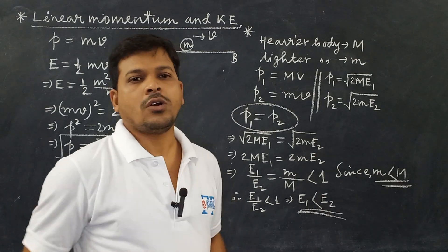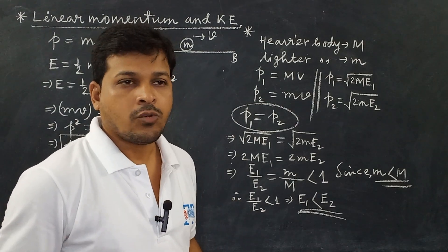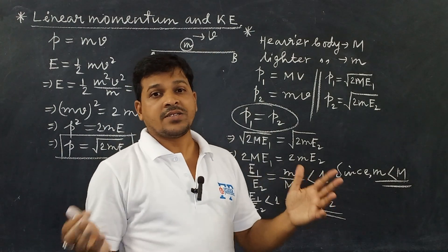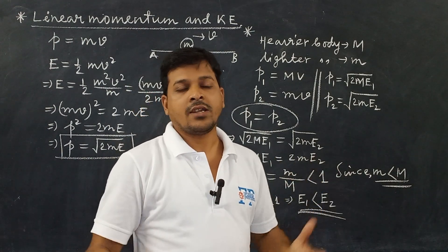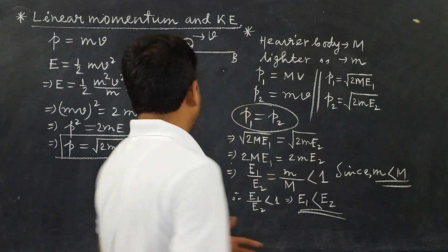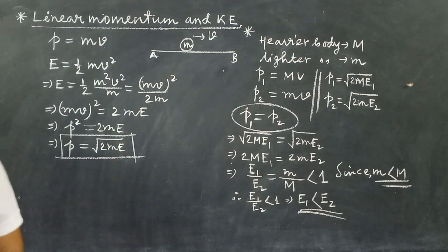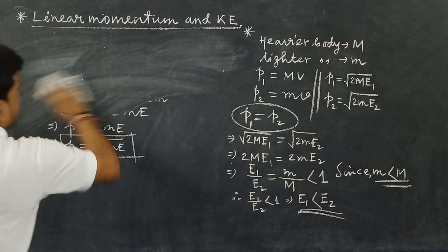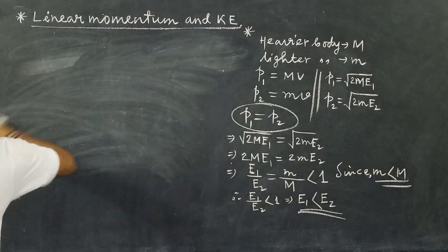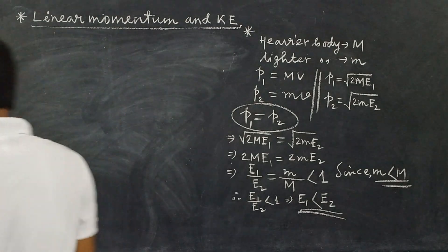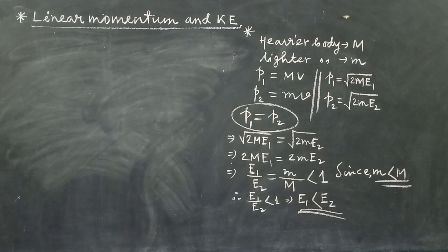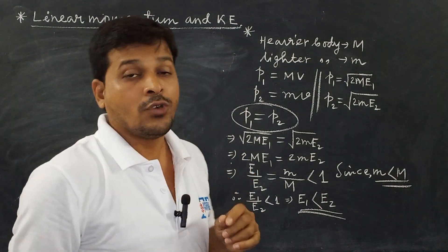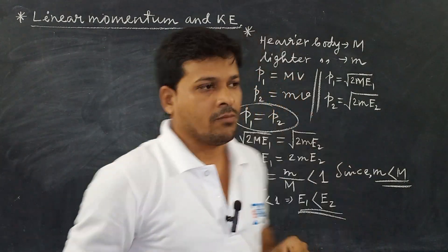Similarly, the opposite case: for two bodies — one heavier and one lighter — if their kinetic energies are the same, which one will have the greater linear momentum? This is another frequently asked question.